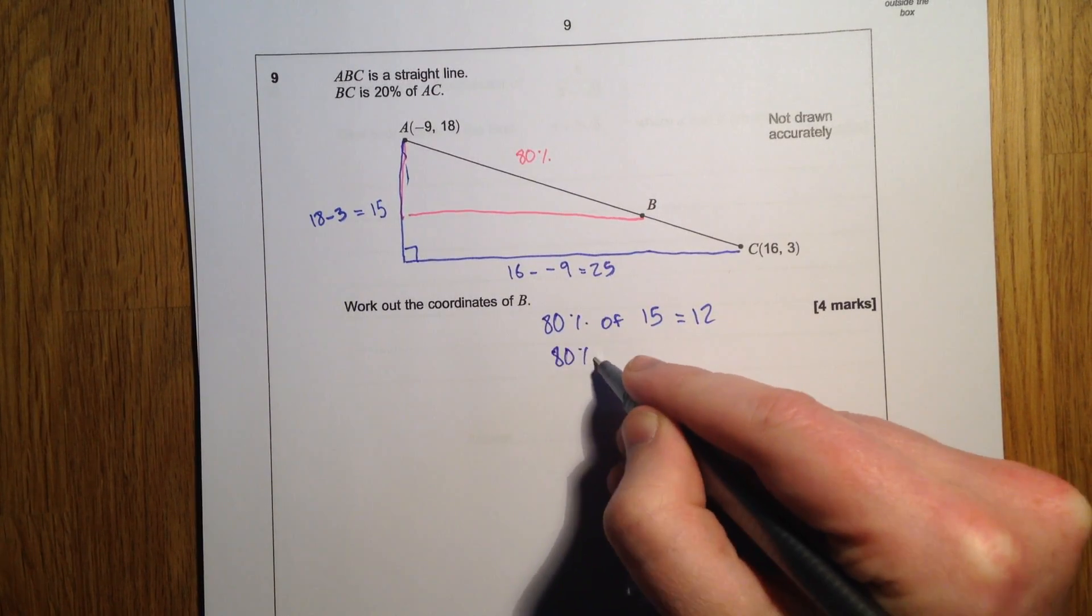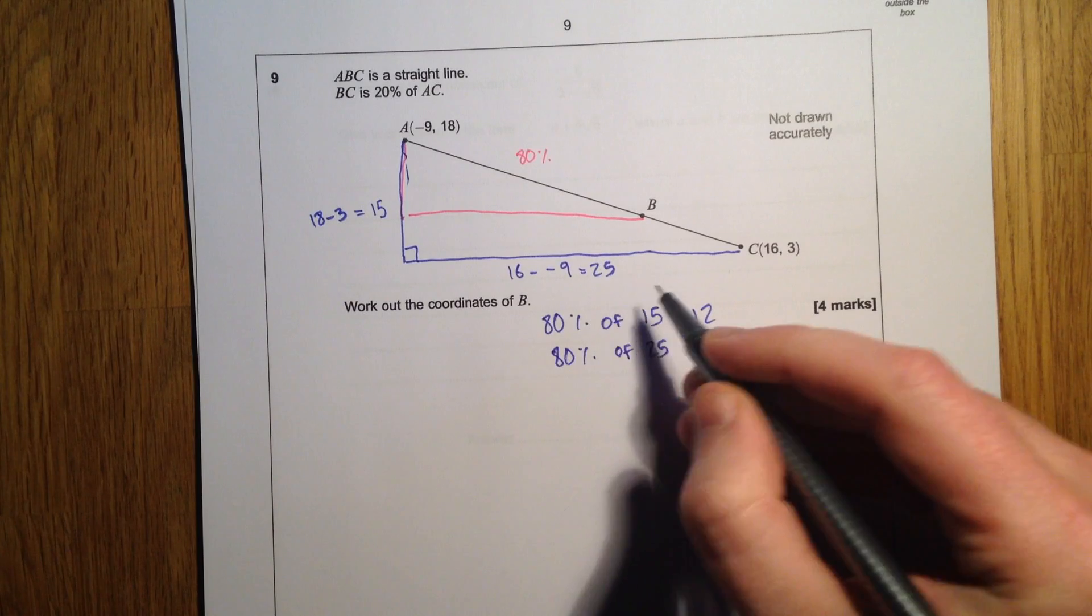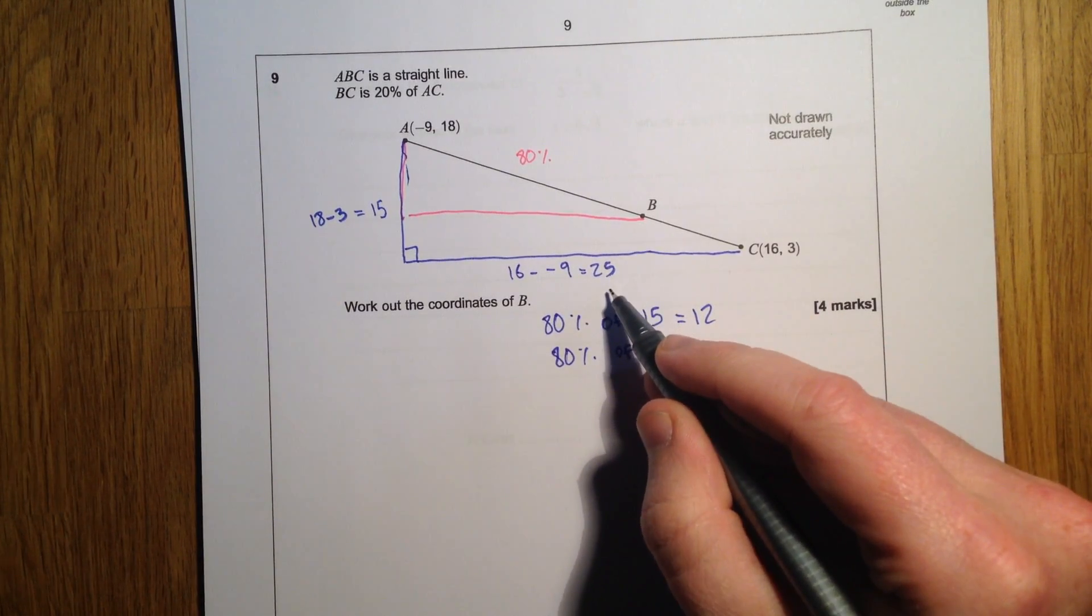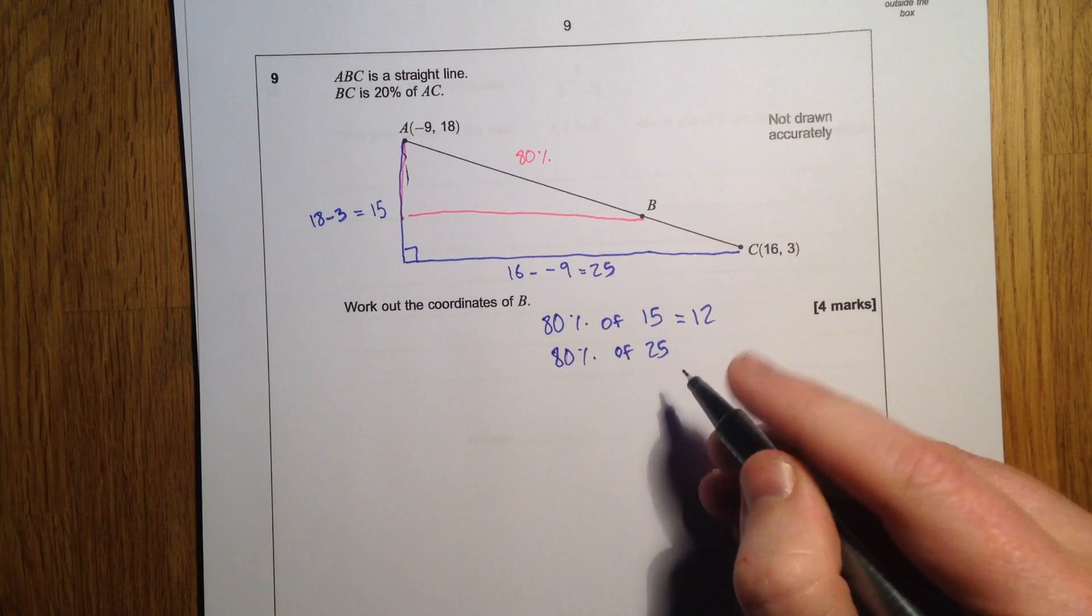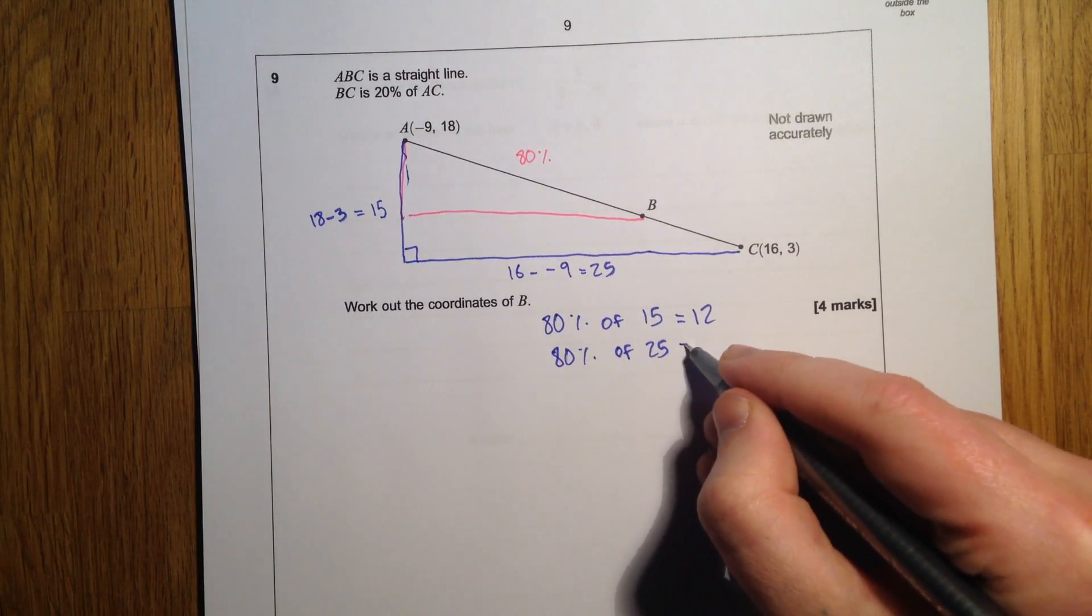80% of 25, well 10% would be 2.5, 20% would be 5, so it's going to be 5 less than the whole thing to give you 80%, so it's going to be 20.